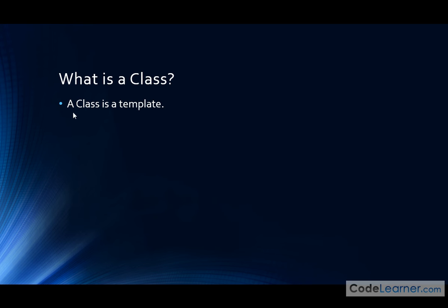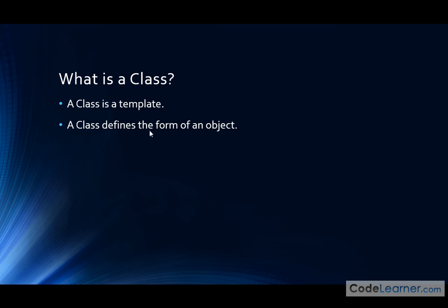So anytime you read a book on Java and it says a class, you need to replace this word with the word template. It's a really good descriptive word. A class defines the form of an object — that's basically restating the first point. It's a template that defines the form of an object, just like we just discussed.